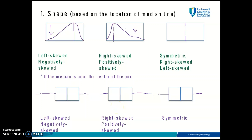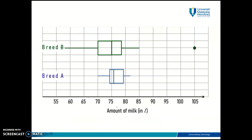Now let's try to determine the shapes of the two box plots we drew in the previous video. This data is about the amount of milk produced by cows owned by Padmael, who owns two breeds — breed A and breed B. From the previous video we identified that breed B has an outlier. Looking at breed A, you can see that the median line is closer to the left side of the box.